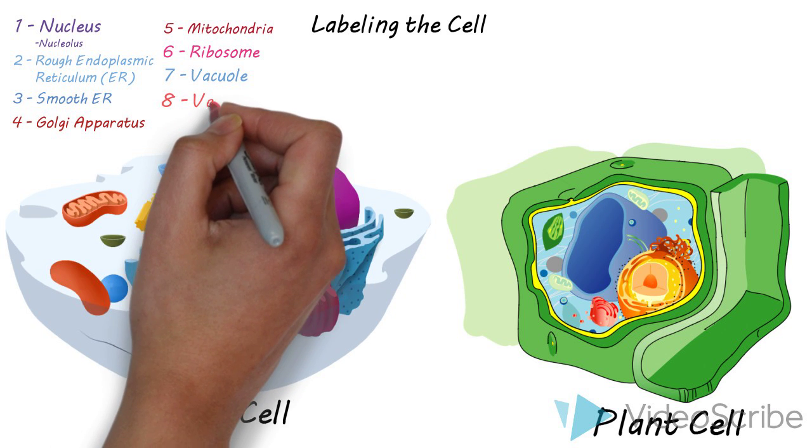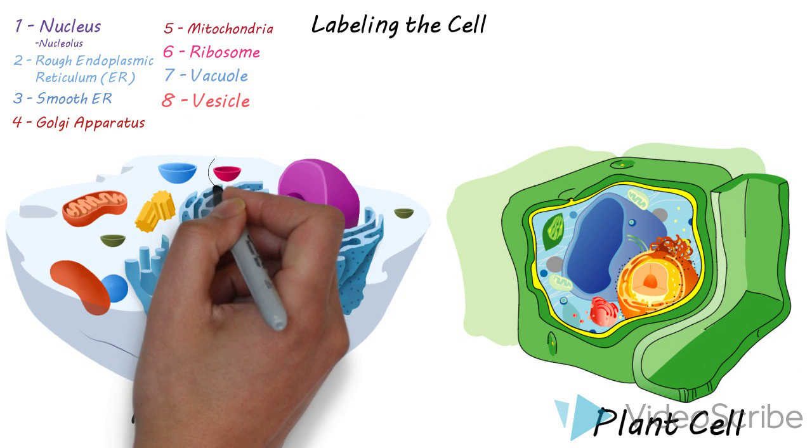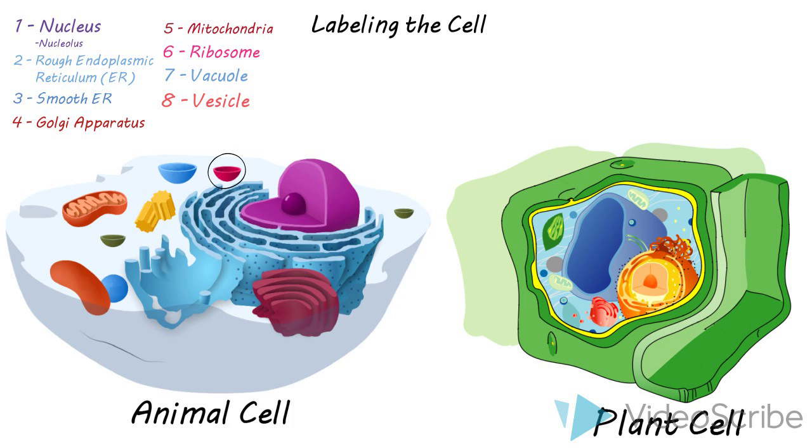Vesicles are also small spherical structures and sometimes you'll see them coming off of the Golgi apparatus.